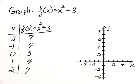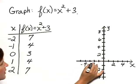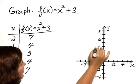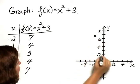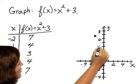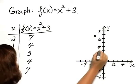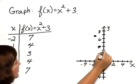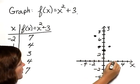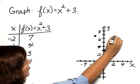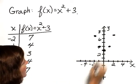We're going to plot each of those points. We have negative 2, 7; negative 1, 4; 0, 3; 1, 4; and 2, 7.